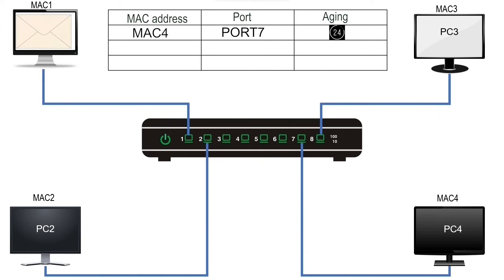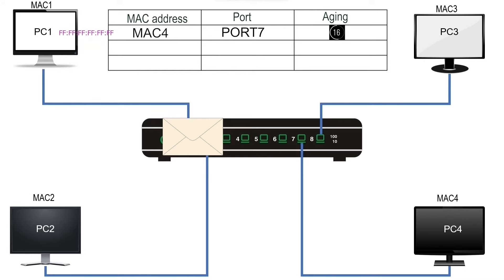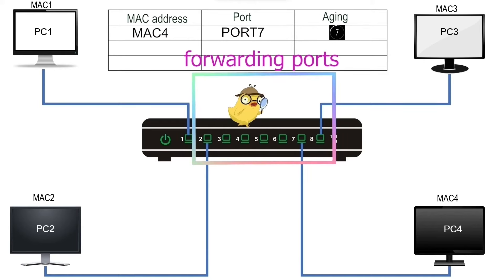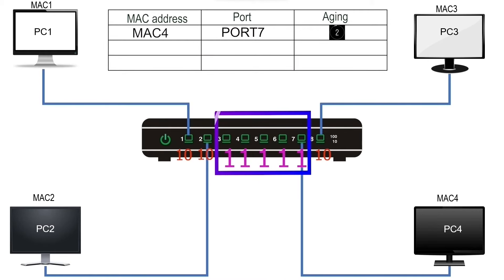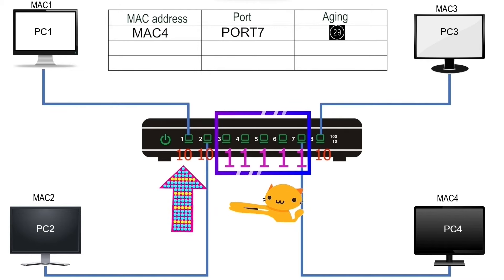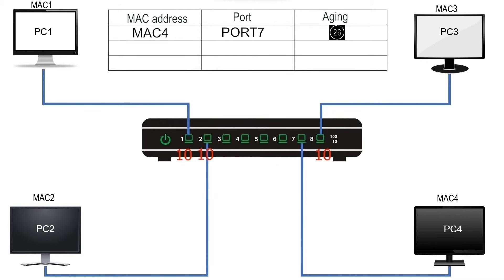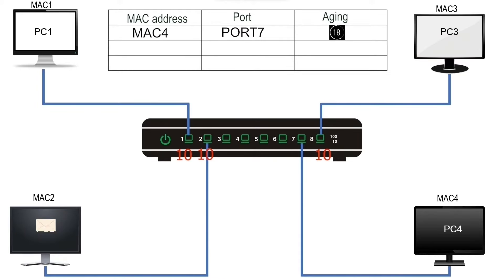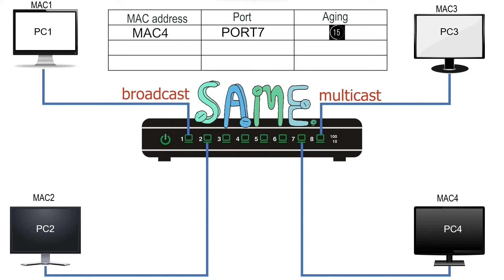PC1 generates a broadcast frame that reaches port 1. The switch checks the CAM table, finds no entry for the destination broadcast address, and decides to forward the frame from all ports except the source port. After selecting forwarding ports, it matches their VLAN ID with the source port. Since ports 3, 4, 5, 6, and 7 do not match the VLAN ID of the source port, it excludes them. It then forwards the broadcast frame only from ports having the same VLAN ID. The switch uses the same steps for multicast frames.